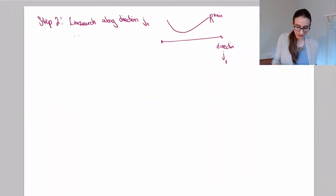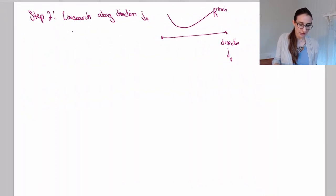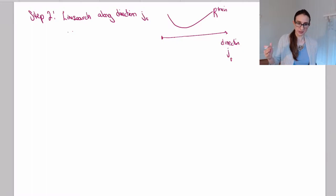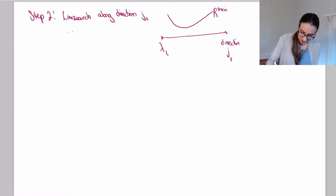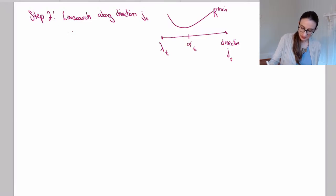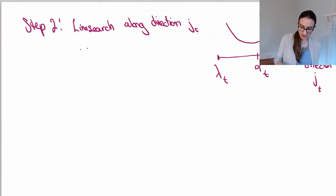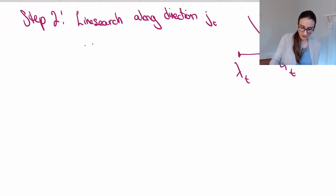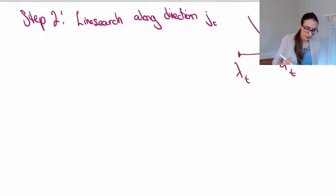We want to do a line search along direction j_t so that we minimize the objective R_train. We start from lambda_t — from where we got to — and then walk a distance alpha in that direction to minimize the objective. That's the calculation we're going to do in this video.